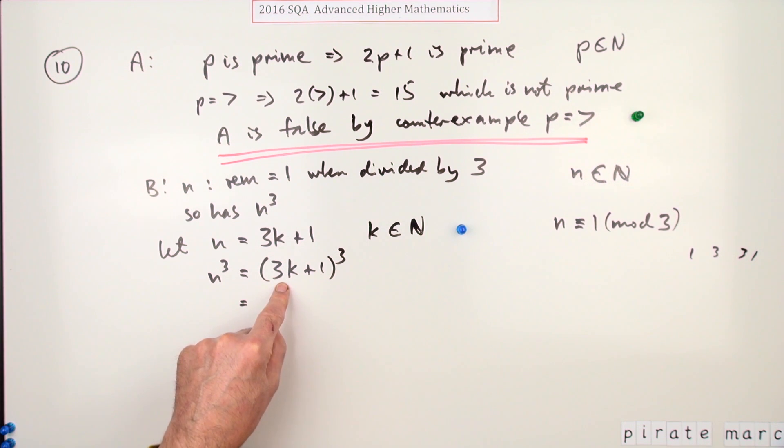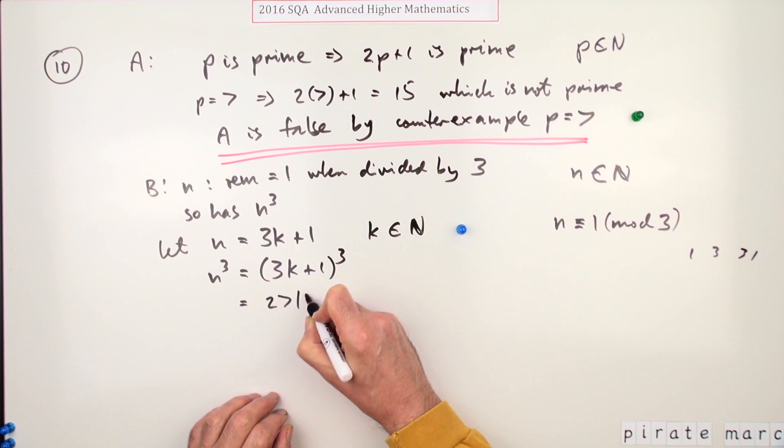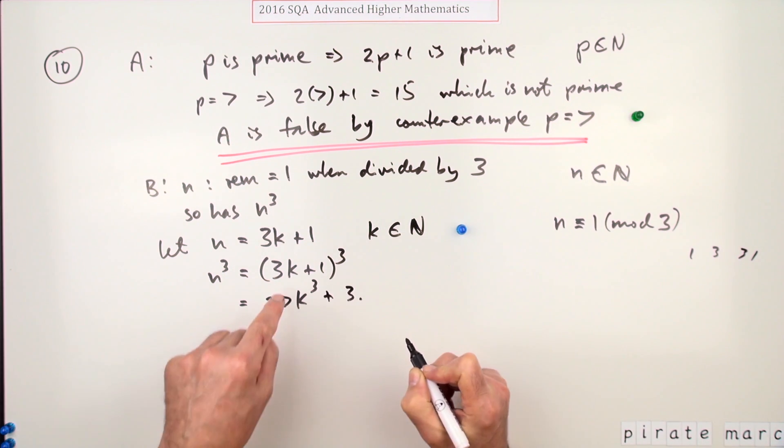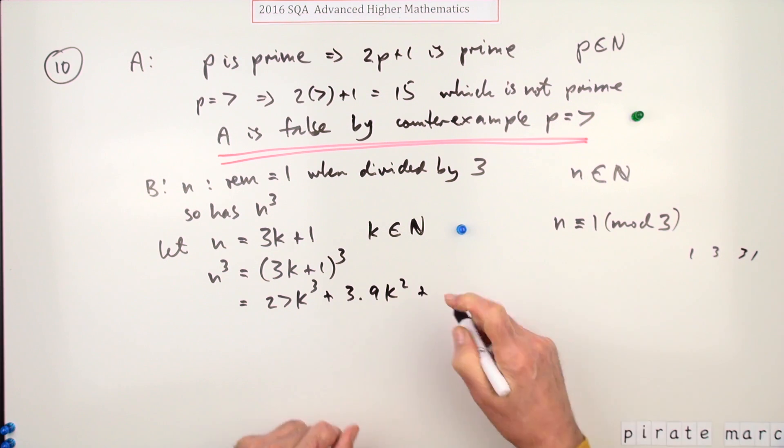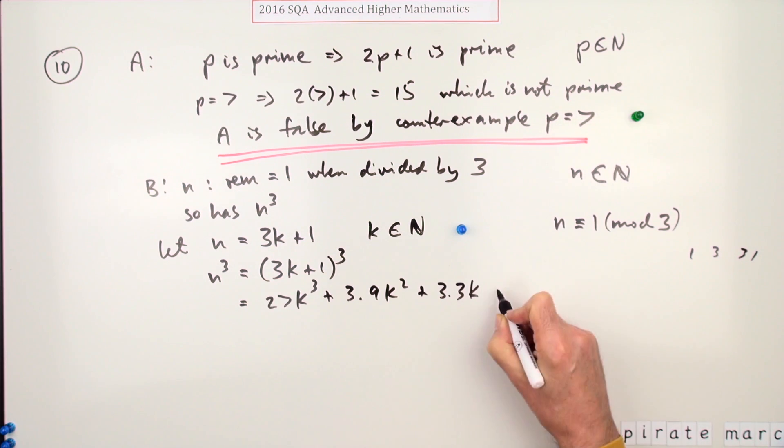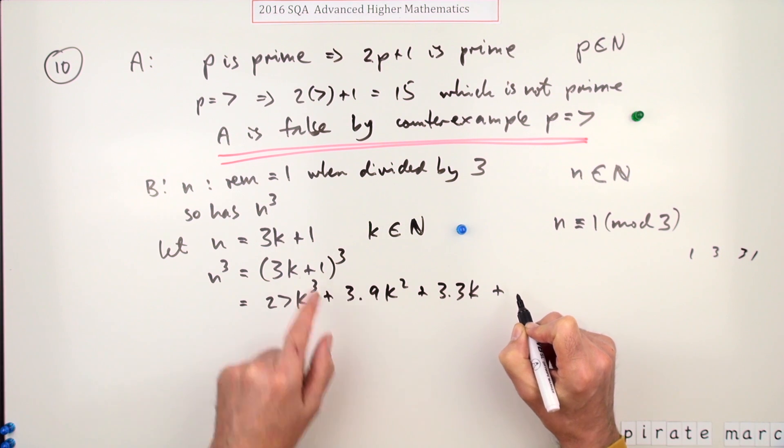So I'll start off with that cubed, so that'll be 27k³. And then there'll be three of that squared, so that's 9k². And then there'll be three again of just that on its own - three times 3k. And finally it won't be there because it's power zero, so it'll just be a one at the end.